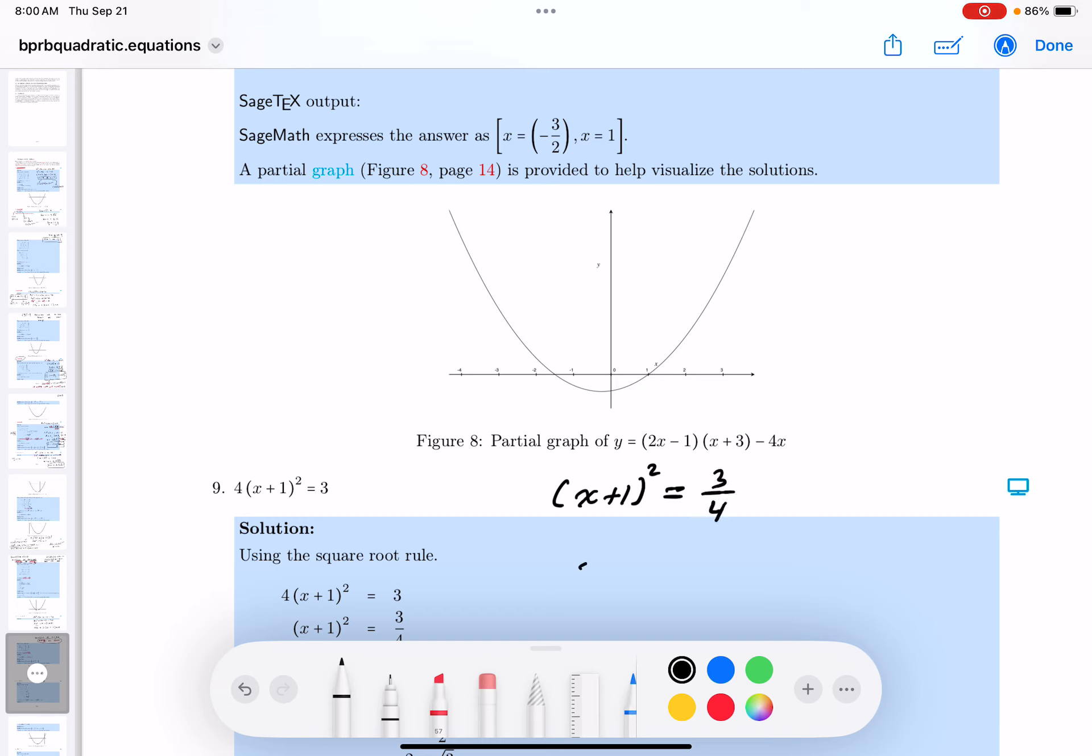So I think it looks really like the square root rule. So x + 1 equals plus or minus the square root of 3 over the square root of 4. Well, that's going to be the square root of 3 over 2, because the square root of 4 is 2.